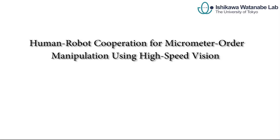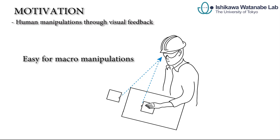We present a human-robot cooperation system that enables human micron order manipulation through the use of high-speed vision. Usually, it is straightforward for humans to perform macro manipulations with visual feedback.